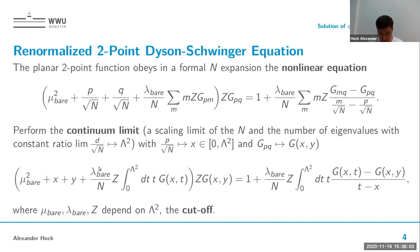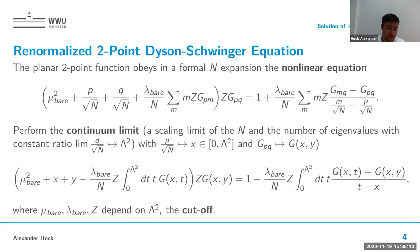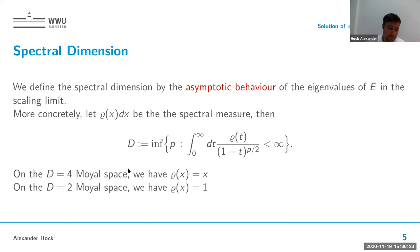The coupling constant renormalization is at the end trivial — it is only finite — because the beta function is actually zero in this model. All renormalization constants depend on the cutoff, and then you want to send the cutoff to infinity such that everything remains finite.